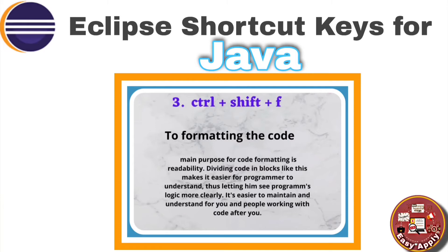The main purpose of code formatting is readability and dividing code into blocks. For example, when you write a condition, it should be clear where the condition starts and where it ends, so you can understand the structure of your code.